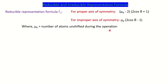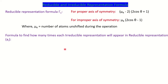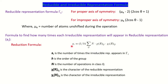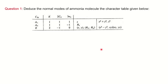The next formula is for finding each irreducible representation present in the reducible representation — we call it the reduction formula. It is: aᵢ = (1/h) × Σ [n × χ(reducible) × χ(irreducible)], where h is the order of the group, n is the number of operations in the class, and the characters come from the reducible representation and the character table respectively. We will now apply these formulas to a question.